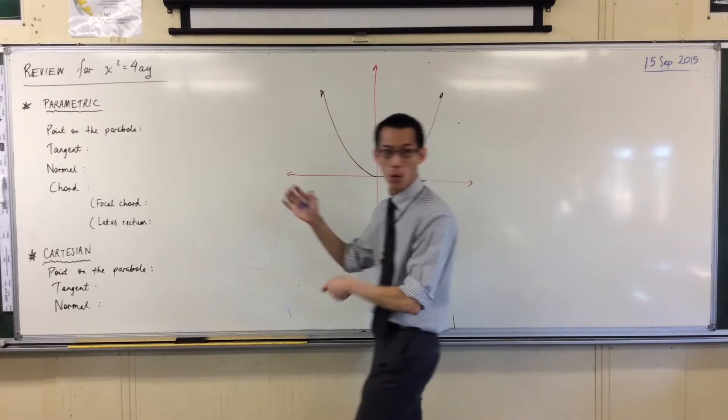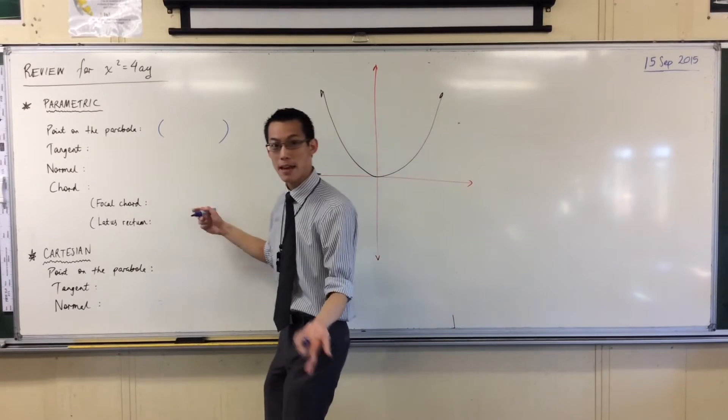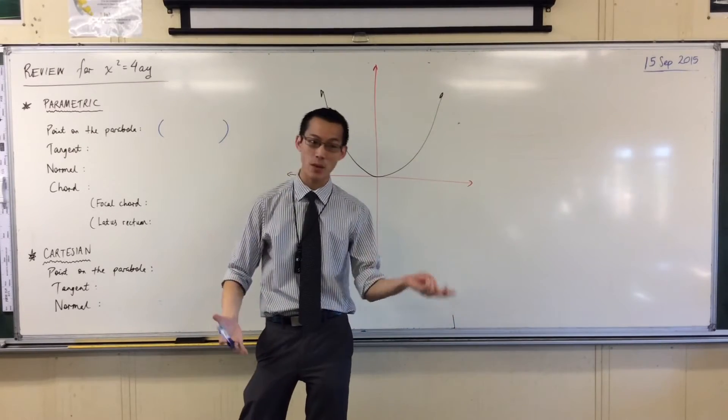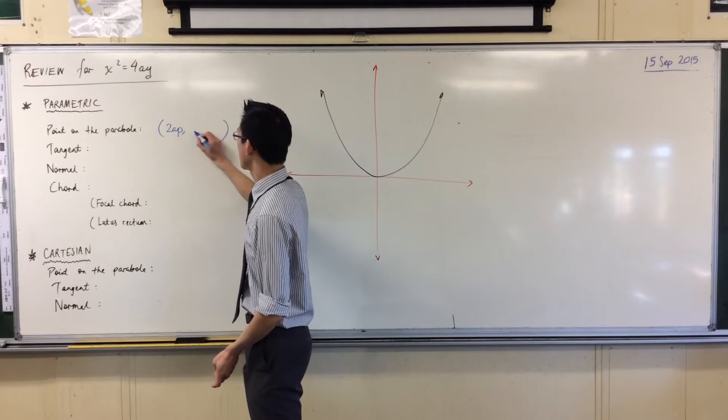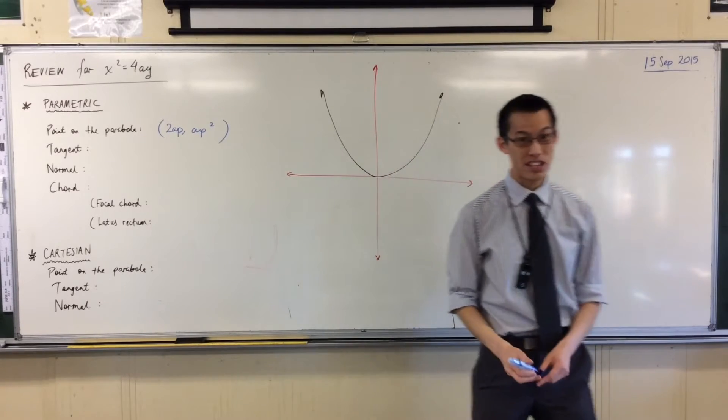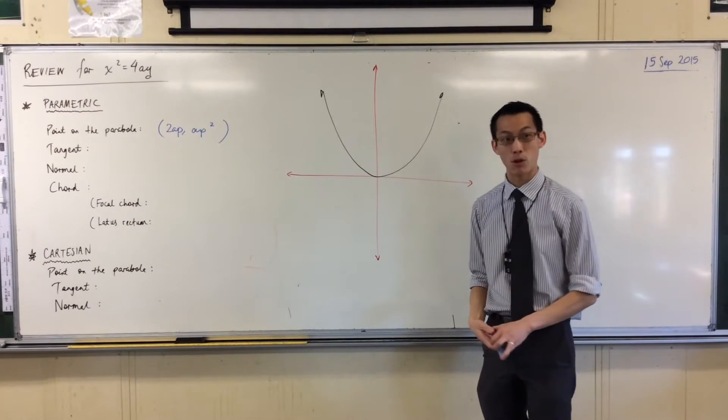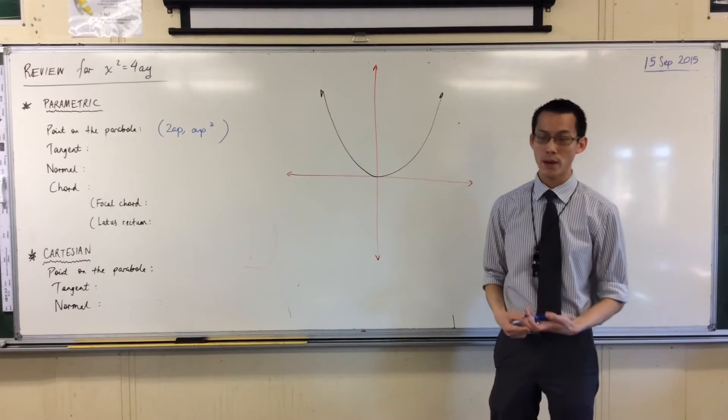It's cos theta sine theta. Every point of the parabola, its coordinates can be given by 2ap, ap squared, or 2at, at squared, or whatever name you want to give that parameter. For this, let's just go with p, that'll do. If you have a second point, that will most likely be called q, and its coordinates will be 2aq, aq squared.